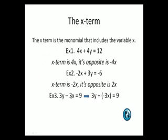In this example, notice that the x term is not in front. The x term is actually the second monomial in the equation. It is also behind a subtraction sign. So before we can identify the x term, we need to apply the leave change change process. So the x term is now actually negative 3x, and its opposite is positive 3x.